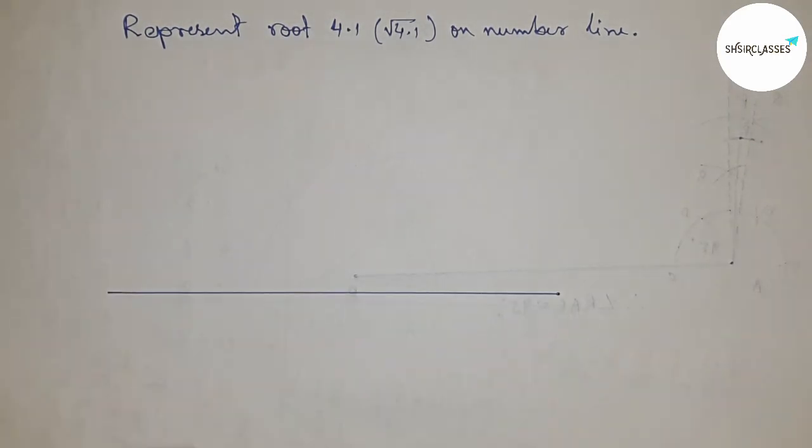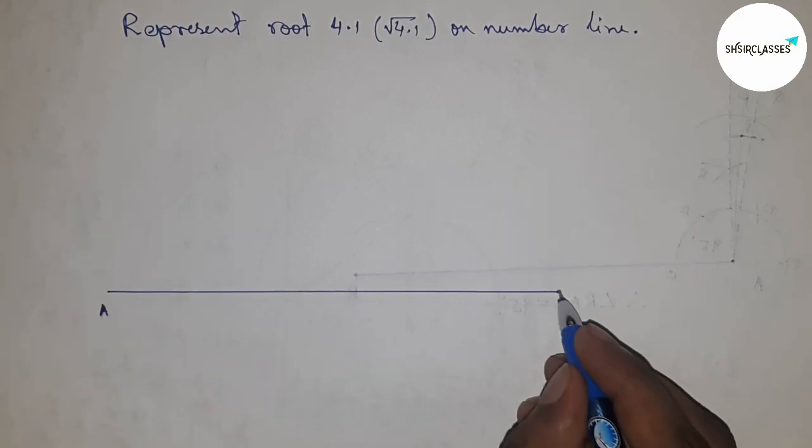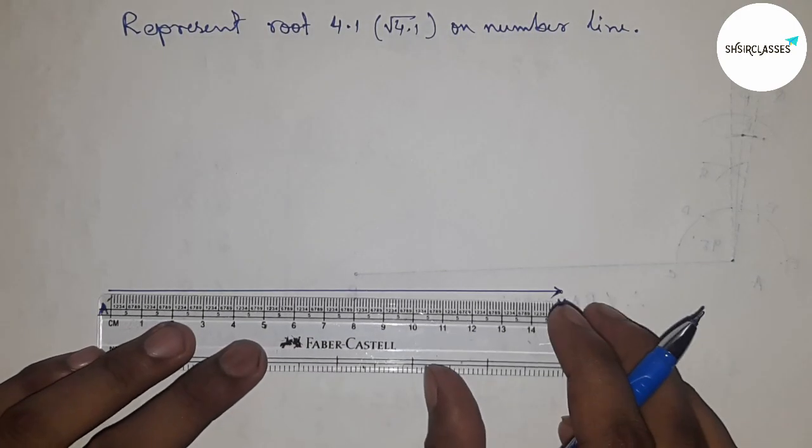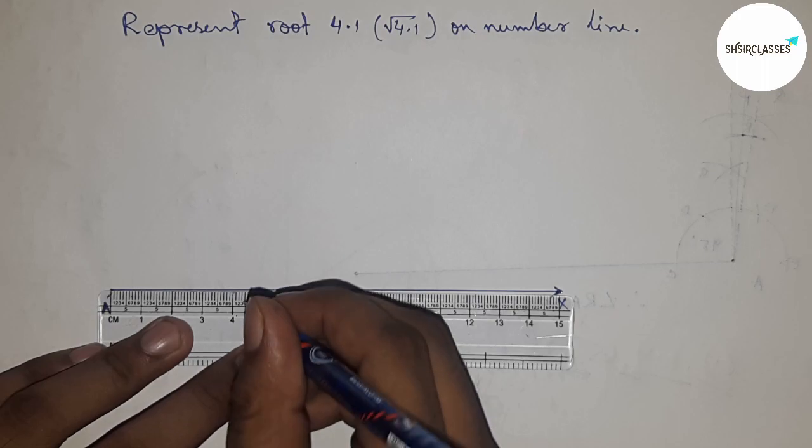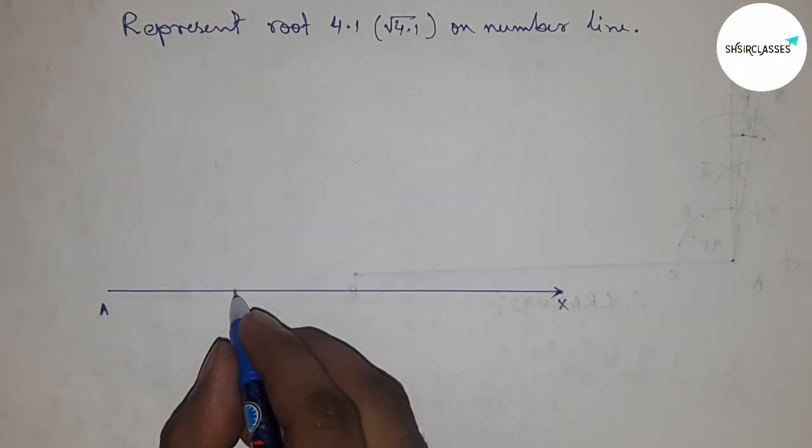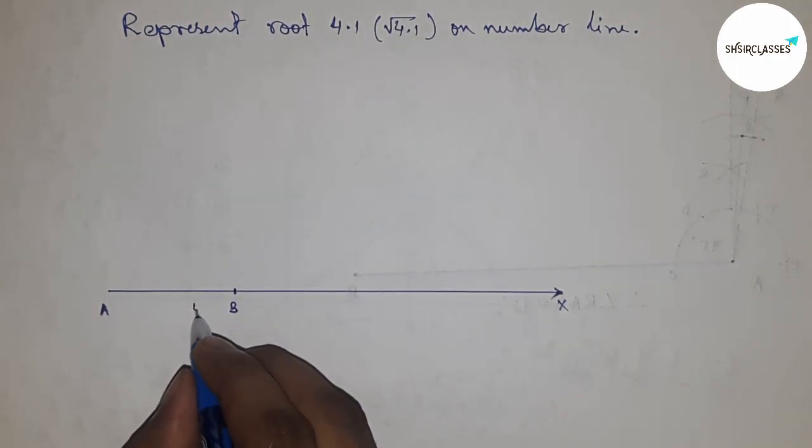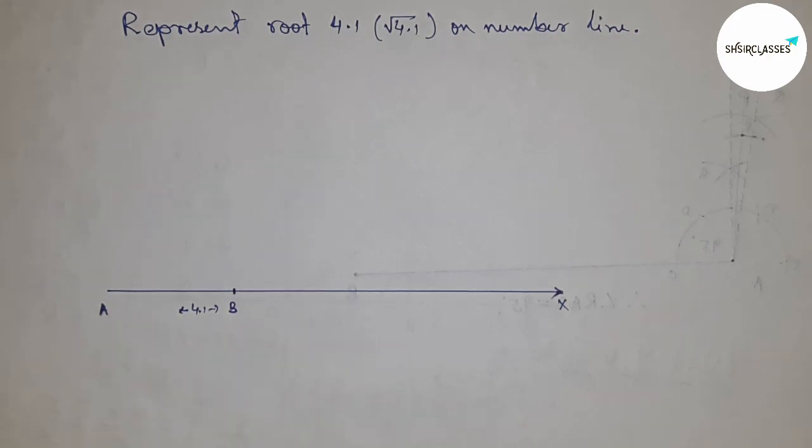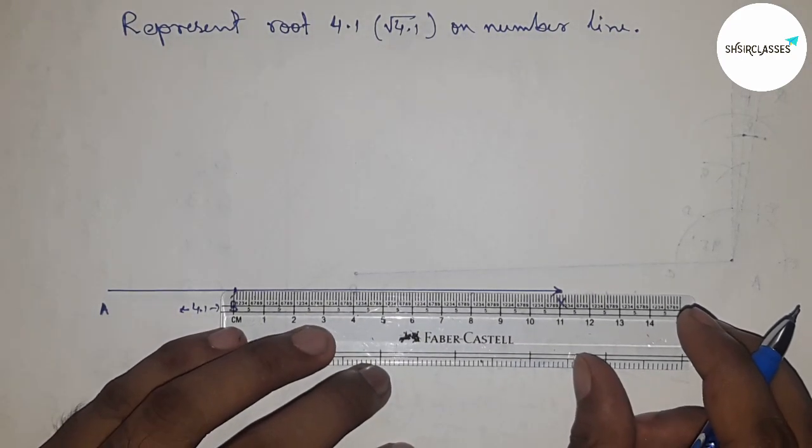First, draw a line of any length - this is line AX. Next, take a length of 4.1 centimeters using a scale. This is point B, and AB equals 4.1 centimeters. Next, mark the numbers on the line.